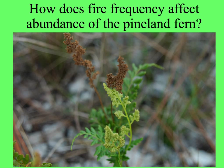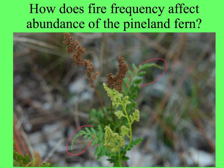This plant is Anemia adiantifolia, the Pineland fern. We might ask: how does the frequency of fire in Pine Rocklands affect the abundance of the Pineland fern? The foliage — the photosynthetic leaves you can see here — are just green. And the sporophylls, or spore-bearing leaves, are separate fronds or separate parts of the fronds. Here are the mature spores — the brown ones. This is a question we might ask in autecology.